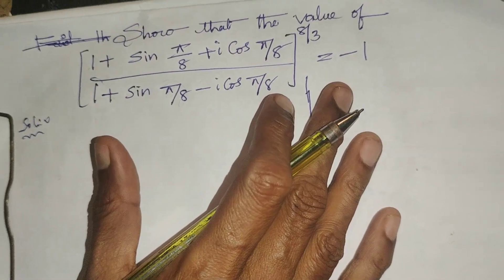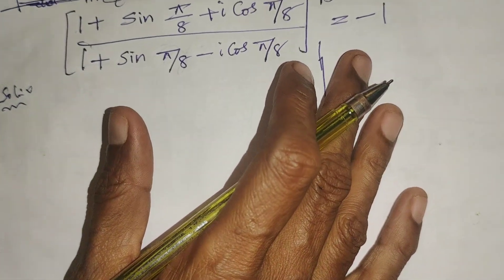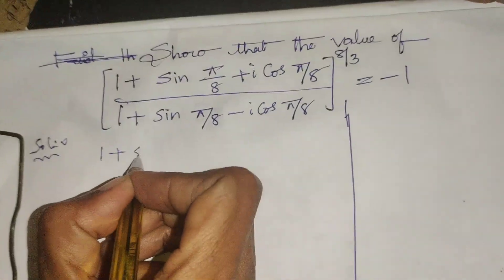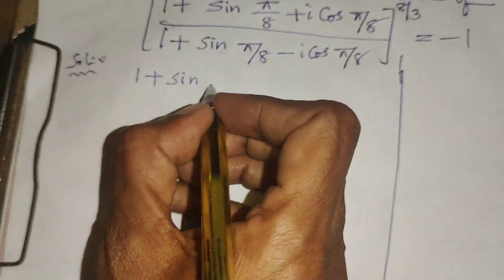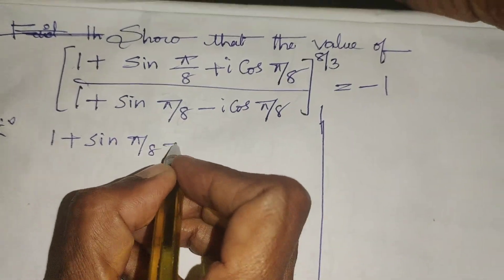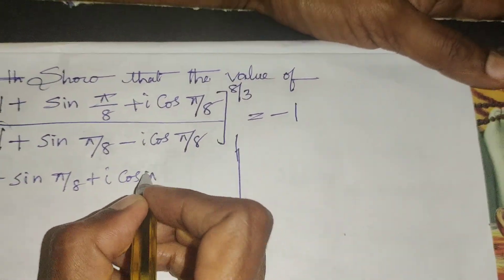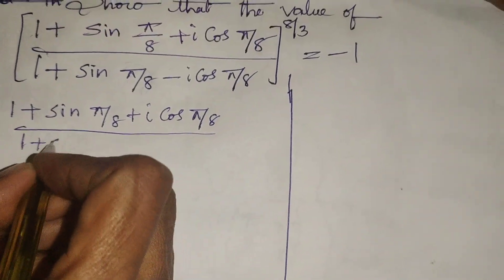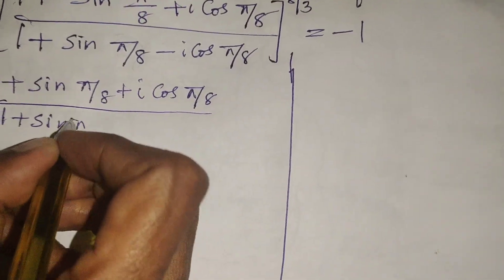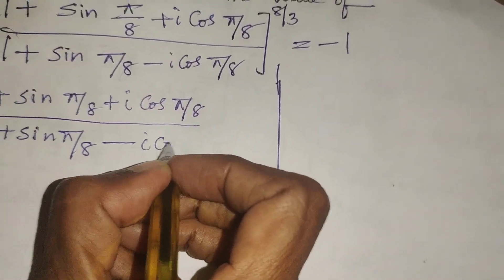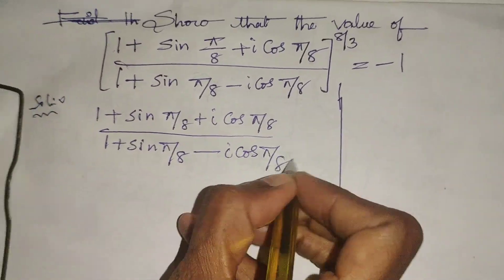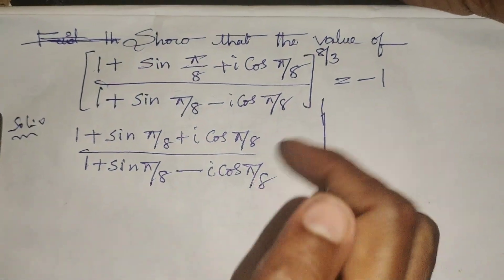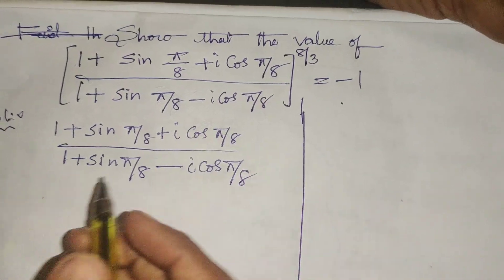First of all, in this given problem we have (1 + sin(π/8) + i·cos(π/8)) / (1 + sin(π/8) - i·cos(π/8)). In this problem, we are going to show that this equals minus 1.